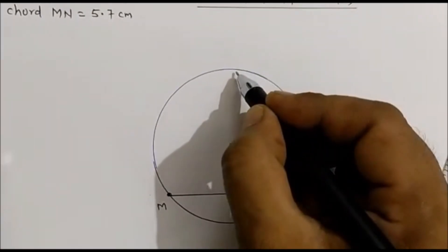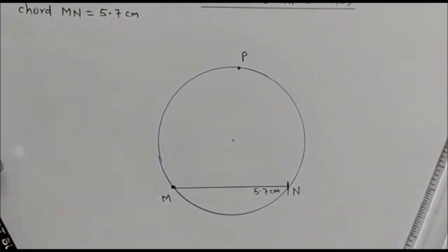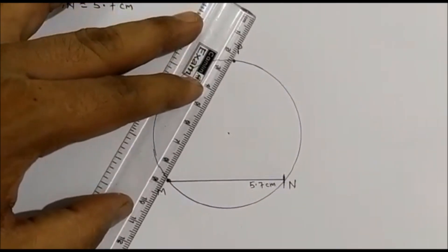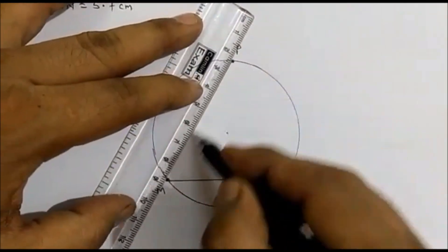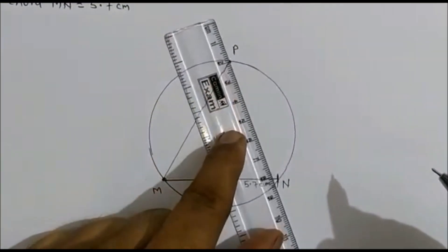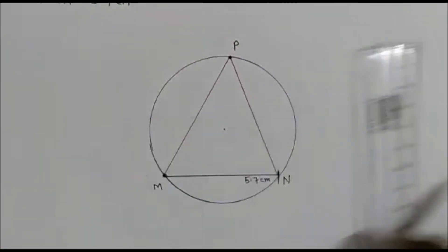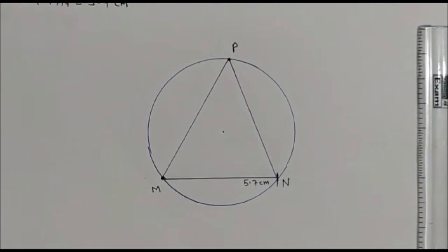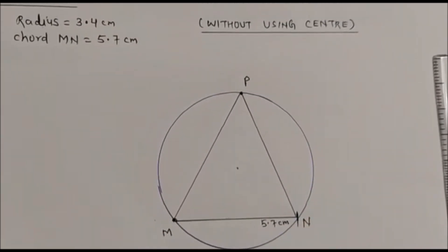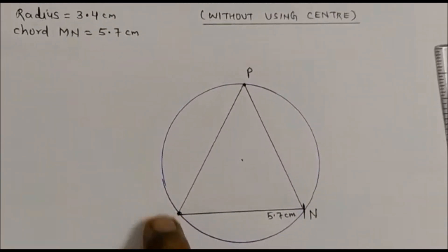We are going to mark one more point on the circle — mark point P. In this method we can construct one inscribed triangle. See, now we are constructing one triangle. Now we have to draw tangents at M and N. First we will draw the tangent at M.